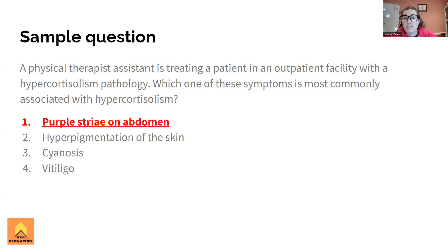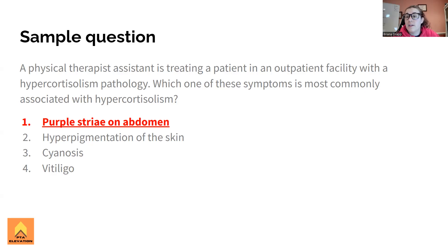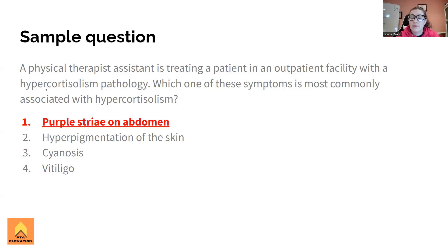When you see hyperpigmentation and vitiligo, both of those are associated with Addison's disease - hypocortisolism. Hypercortisolism is Cushing syndrome. Definitely go watch the video on that. You'll see the purple striae on the abdomen, the moon face, the buffalo hump on the back, increased weight gain, and fatty deposits in different areas - all associated with Cushing syndrome. Hyperpigmentation, cyanosis, and vitiligo are all hypo - Addison's disease. Make sure you read the whole question carefully. If you didn't see the word 'hyper' in this question, you would have got it wrong. Understanding the difference between these two pathologies is essential to not making mistakes moving forward.